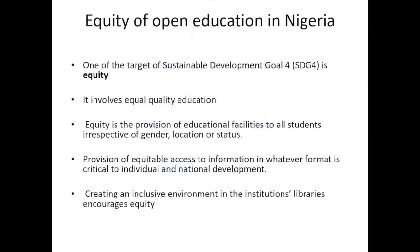Equity of open education in Nigeria. One of the targets of Sustainable Development Goal 4 is equity. Equity involves equal quality education — it is the provision of educational facilities to all students, irrespective of gender, location, or status. Provision of equitable access to information in whatever format is critical to individual and national development, especially in Nigeria. Equity encourages creating an inclusive environment in institutions' libraries. The goal of equity is ensuring equal access to all levels of education and vocational training for the vulnerable and the physically challenged by the year 2030.